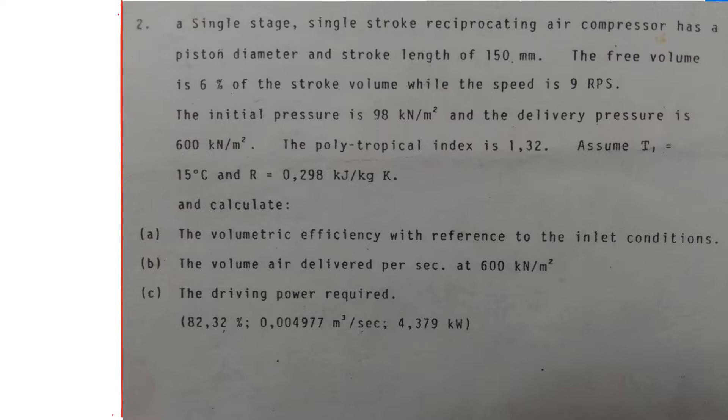A single-stage, single-stroke reciprocating air compressor has a piston diameter and stroke length of 150 mm. The free volume is 6% of the stroke volume, while the speed is 9 revolutions per seconds.